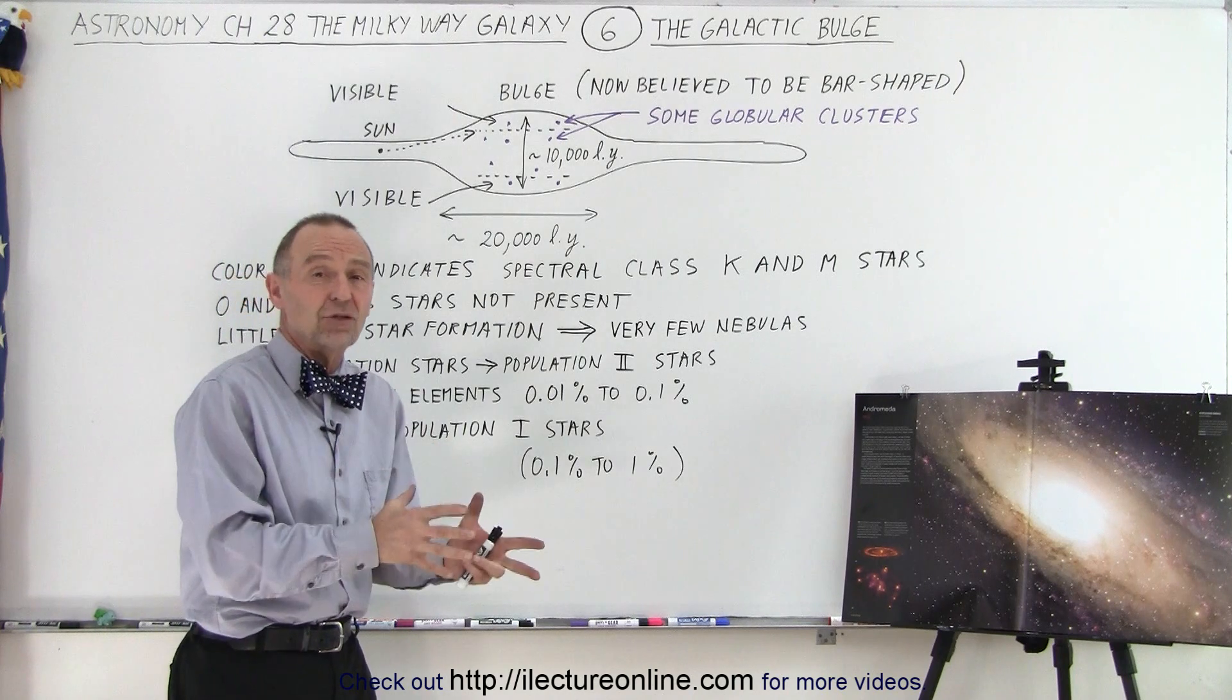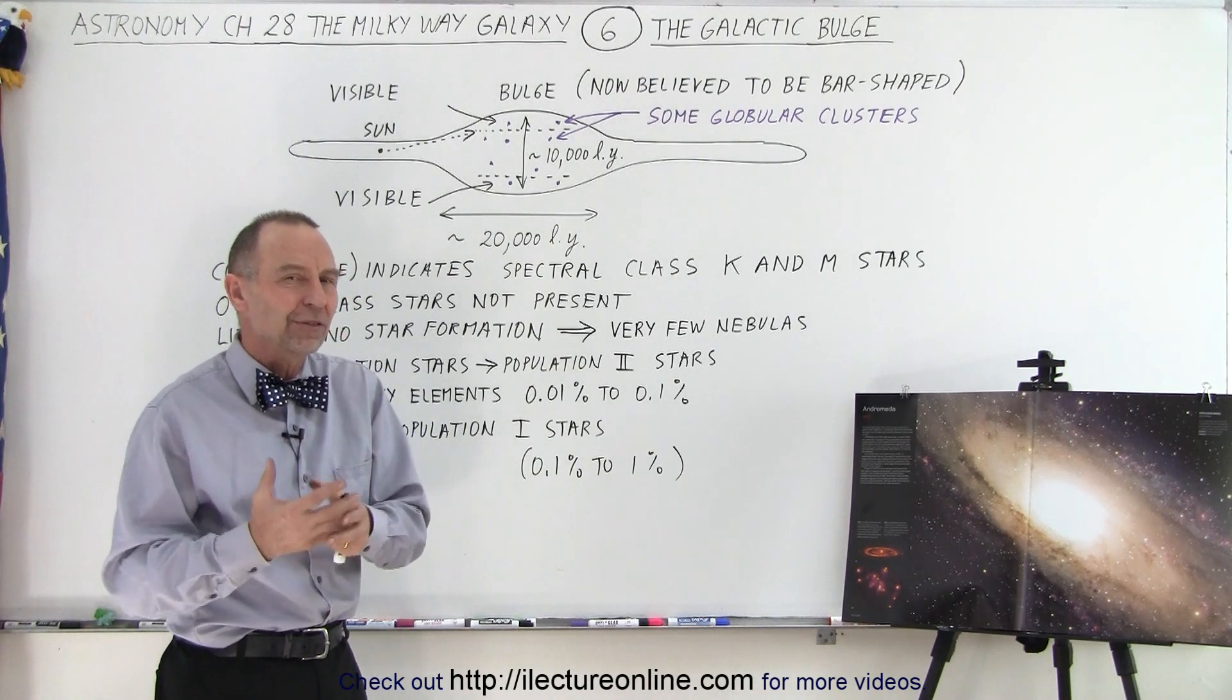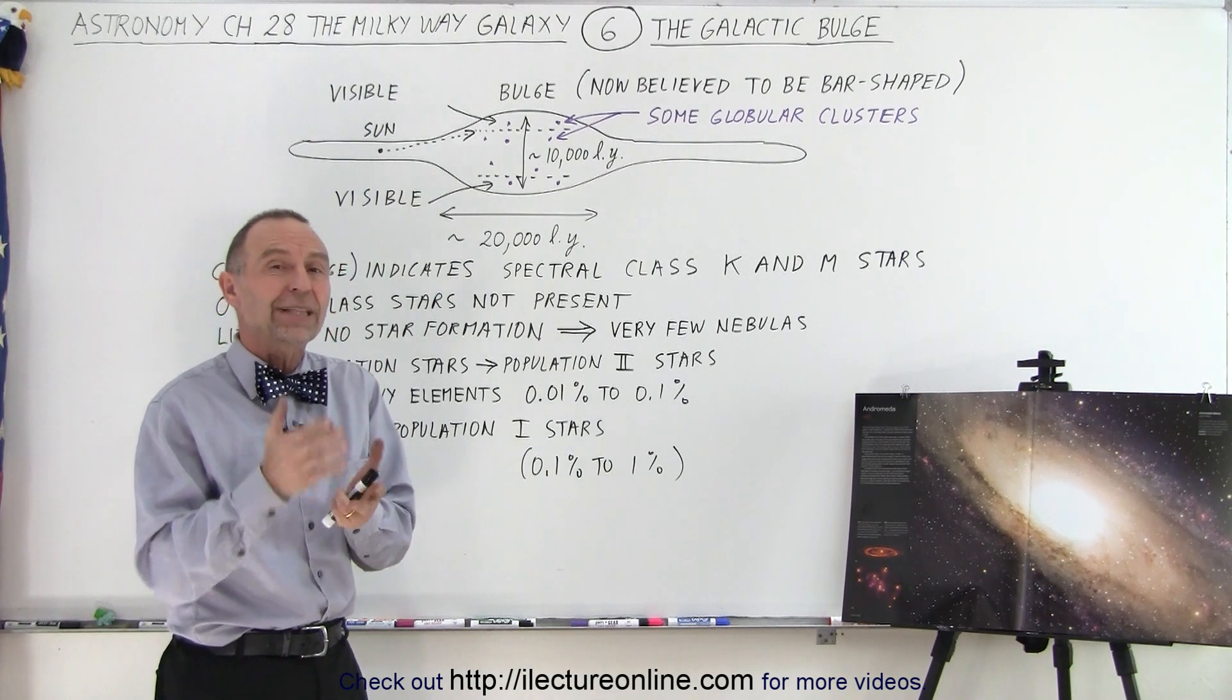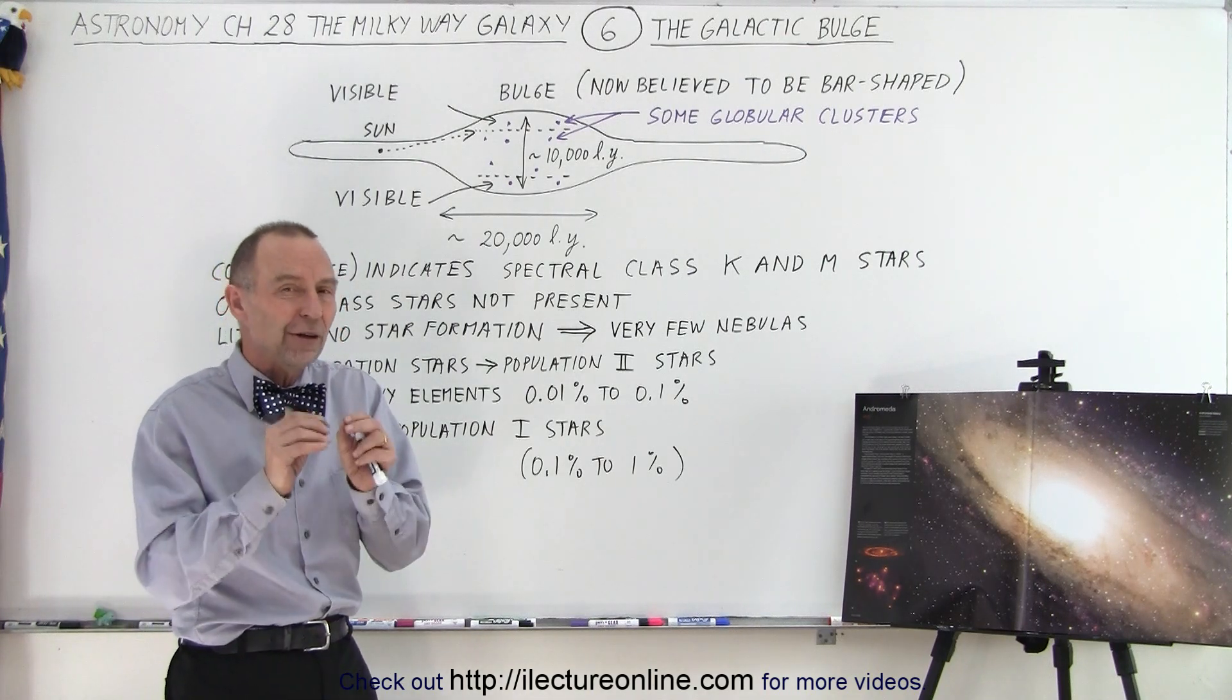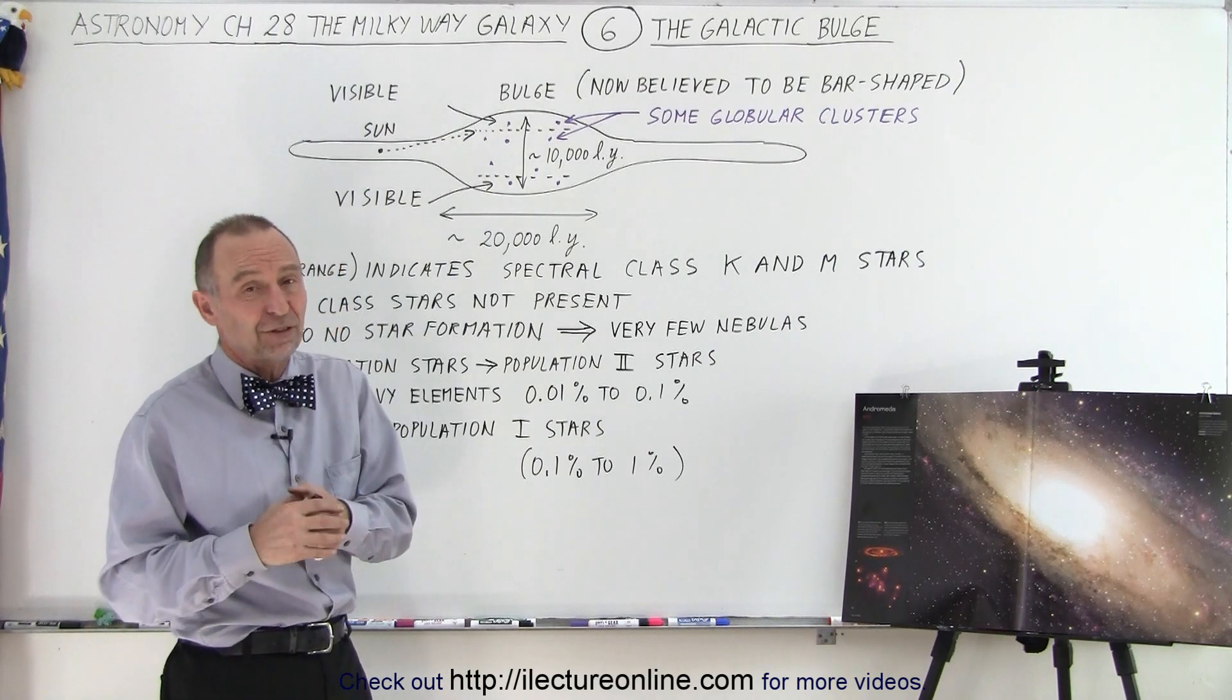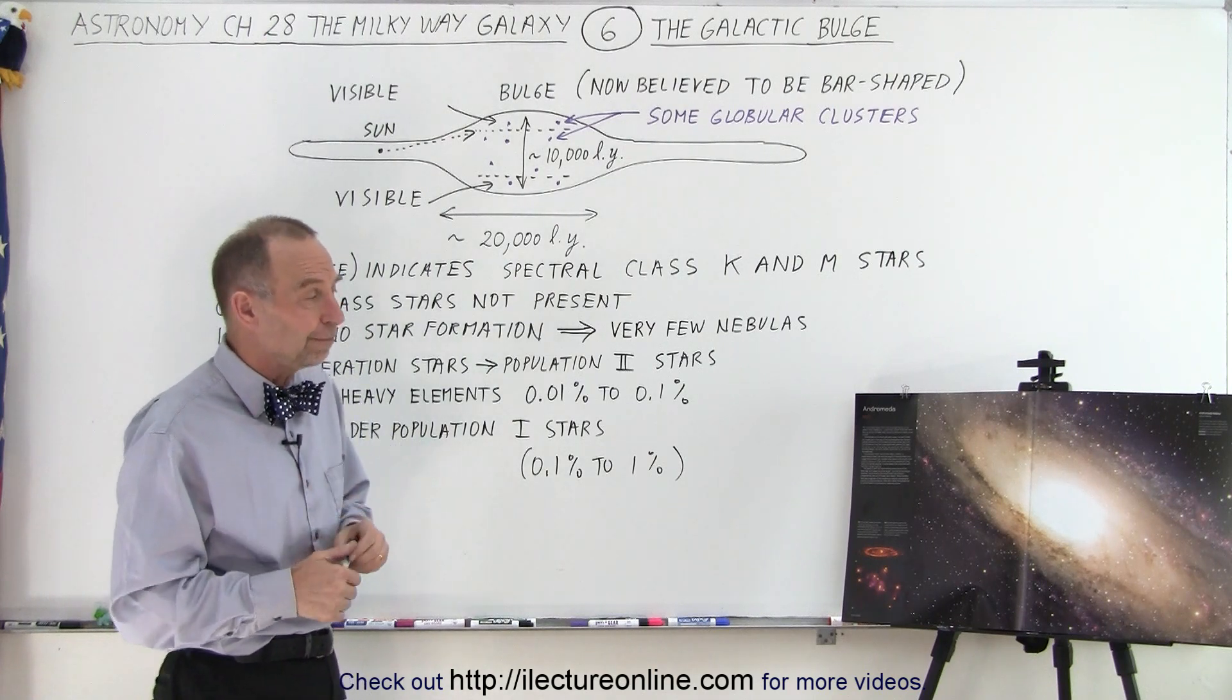They're typically what we call first-generation stars, stars that were formed near the very beginning of the formation of the entire universe. And therefore, those stars contain virtually nothing but hydrogen and helium. They're 99.9% or even more than that, simply hydrogen and helium, and very, very little, very few other heavier elements, especially not the metal types that we would find in the newer type stars like our Sun.